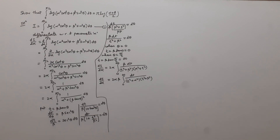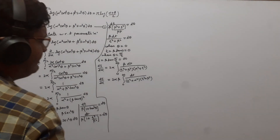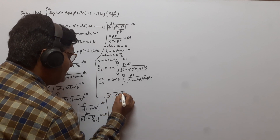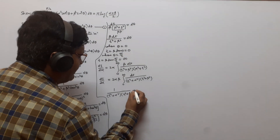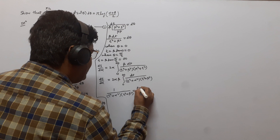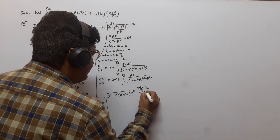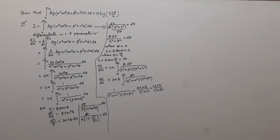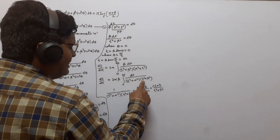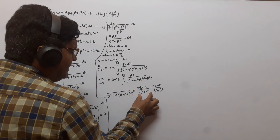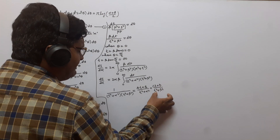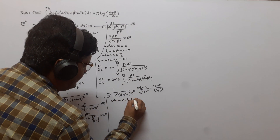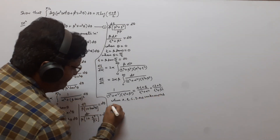We need to integrate 1/[(t² + α²)(t² + β²)] using partial fractions. We suppose 1/[(t² + α²)(t² + β²)] = (At + B)/(t² + α²) + (Ct + D)/(t² + β²), where A, B, C, D are unknowns which we have to find.